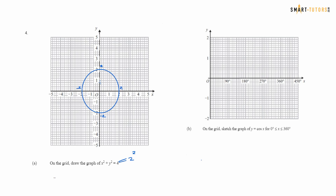Also on the grid, sketch y = cos x for 0° to 360°. At 0°, cos = 1; at 90°, cos = 0; at 180°, cos = −1; at 270°, cos = 0; and at 360°, cos = 1. On the actual graph sheet, draw a smooth cosine bucket-shaped curve through these key points.